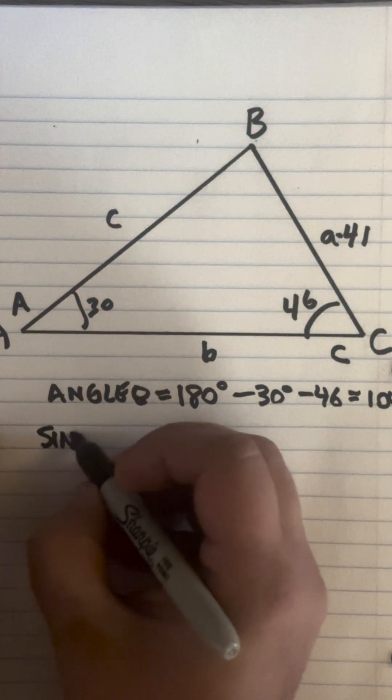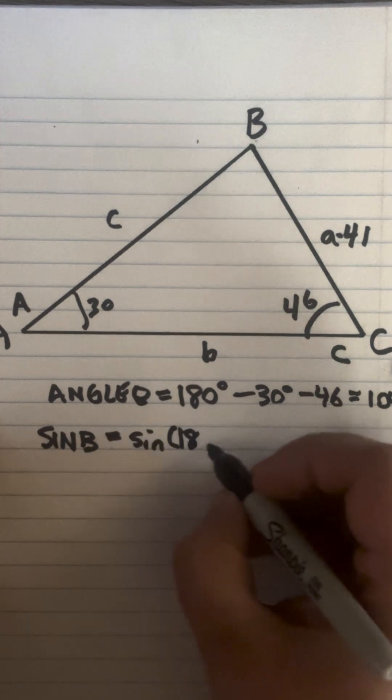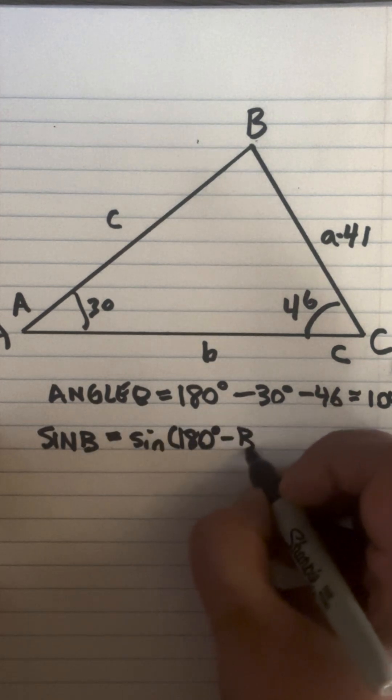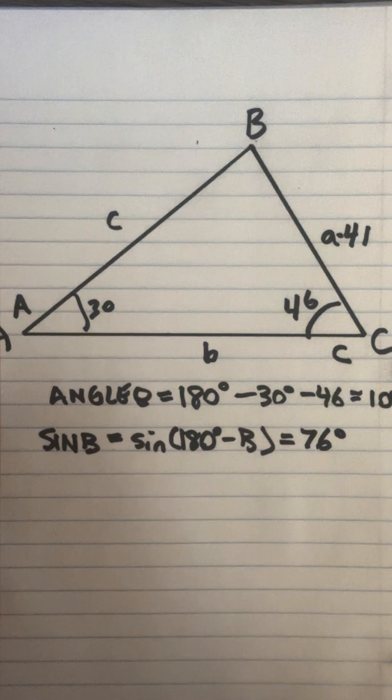Then we want to find sine of B which equals sine 180 degrees minus B which equals 76 degrees.